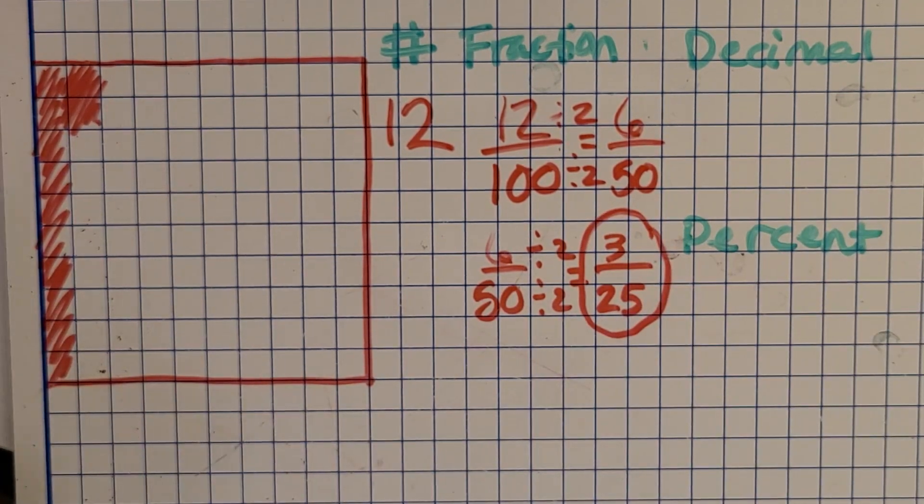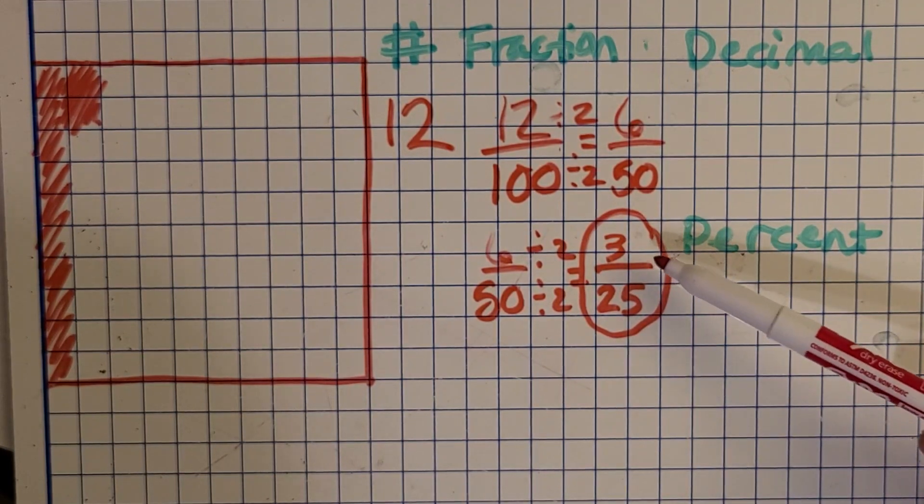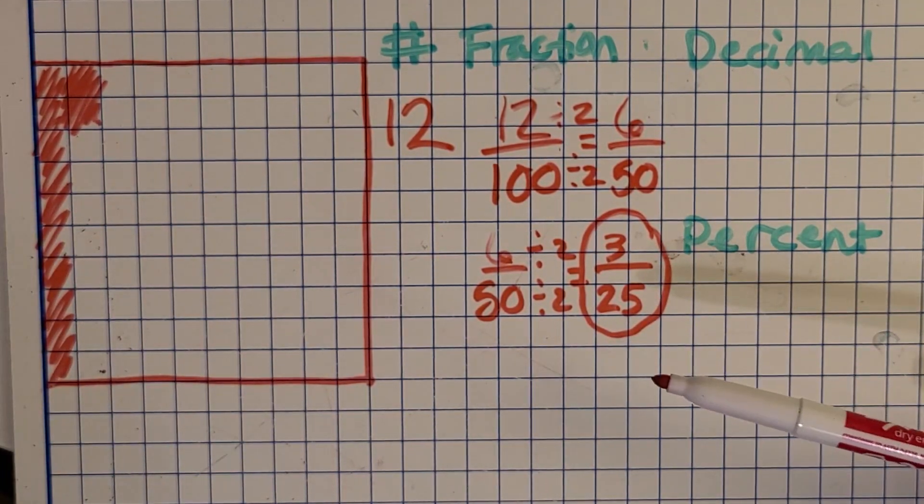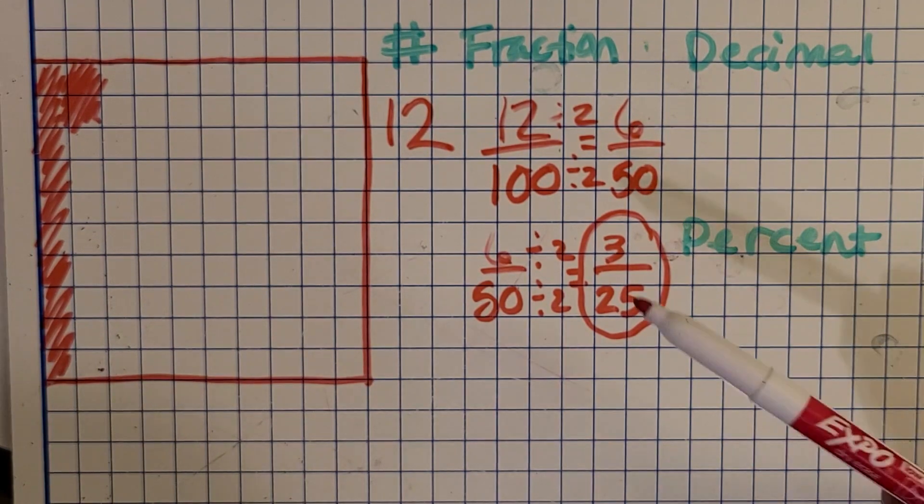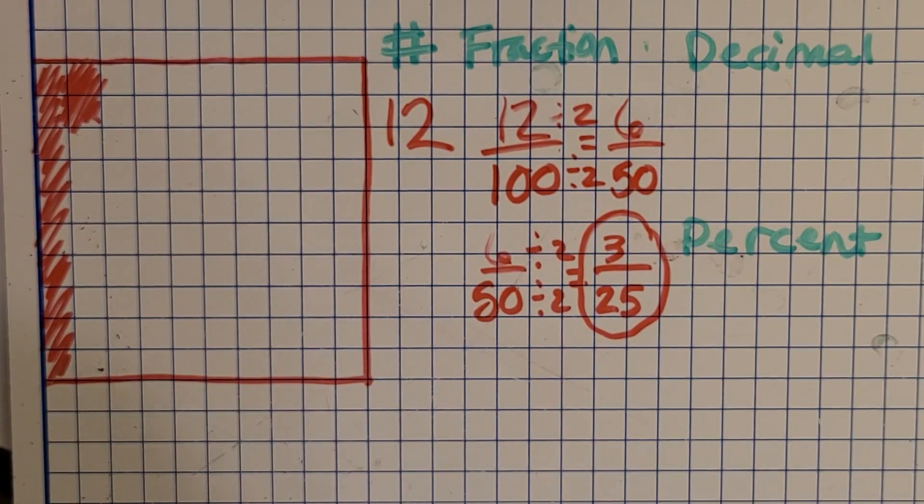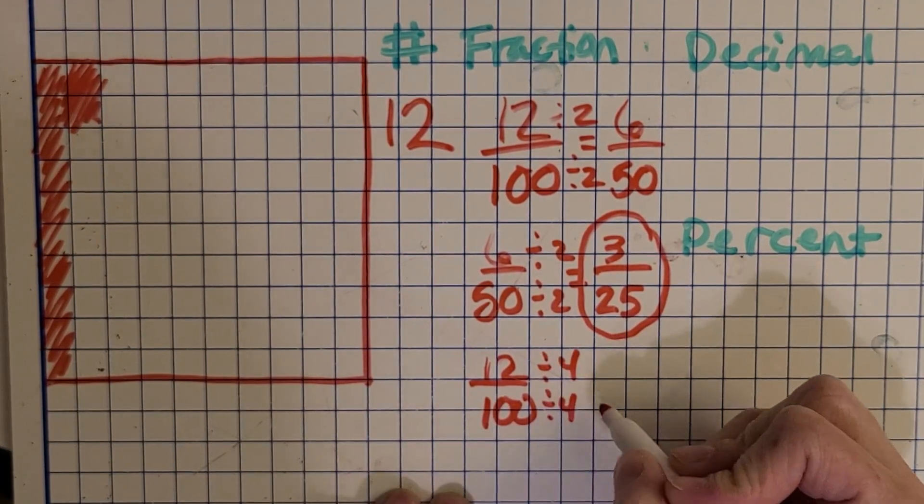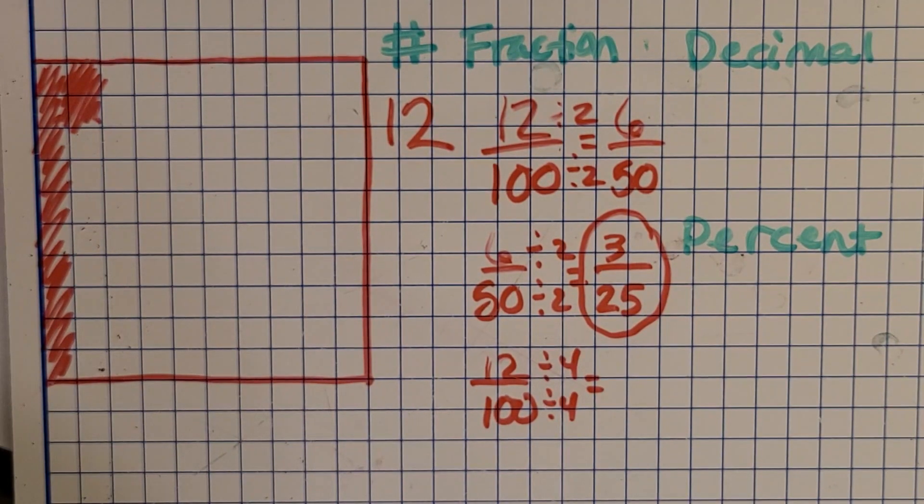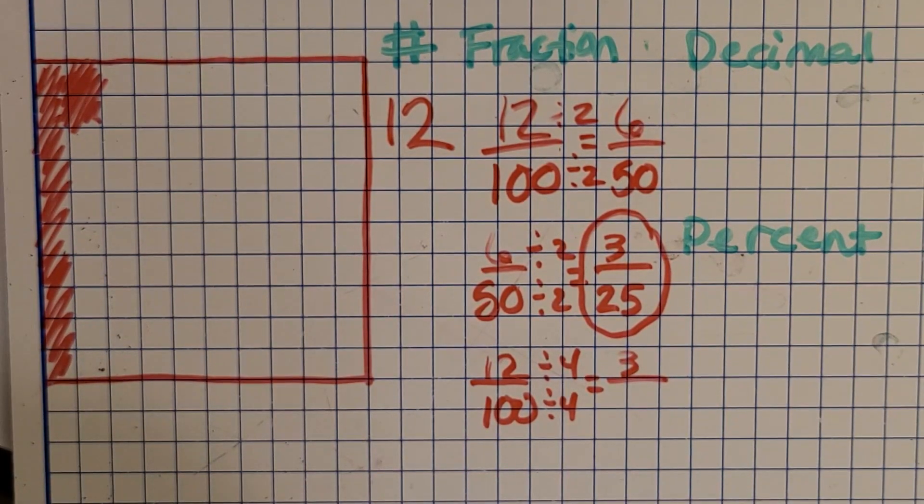And you know you're done whenever they don't have anything else in common that you can divide by. For example, 3 can really, it's prime, so it can really only be divided by 3. 25 though is not a 3 fact. So this is not going to work. This is my simplest form then. The other thing you might be saying is some of you might be thinking, well, instead of dividing by 2 twice, couldn't we just divide by 4 right away? And yes, you can. So 12 divided by 4 is 3. And 100 divided by 4, I like to think of money on that one, 4 quarters, so 25.